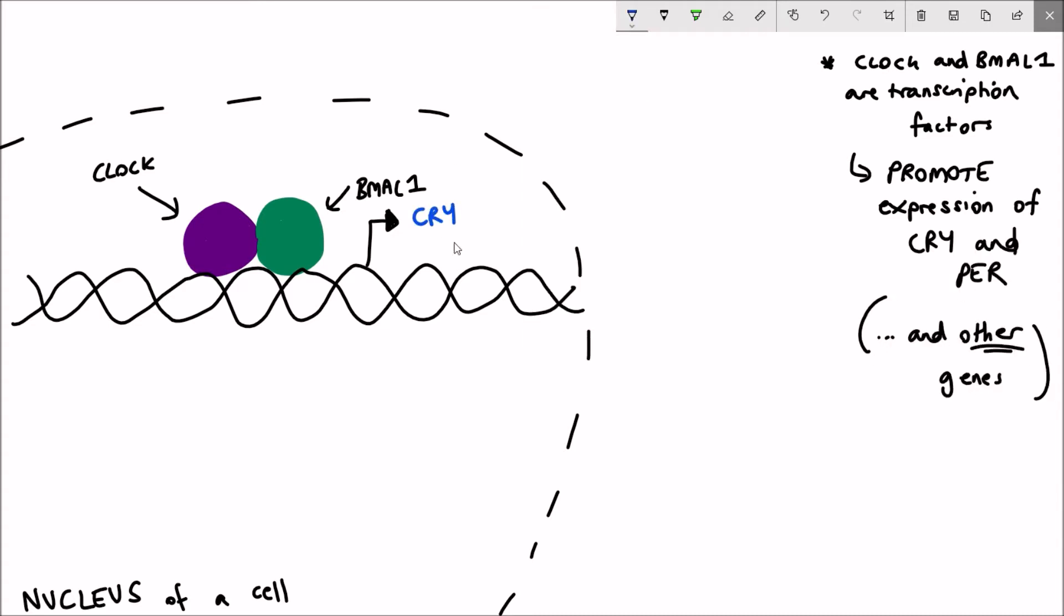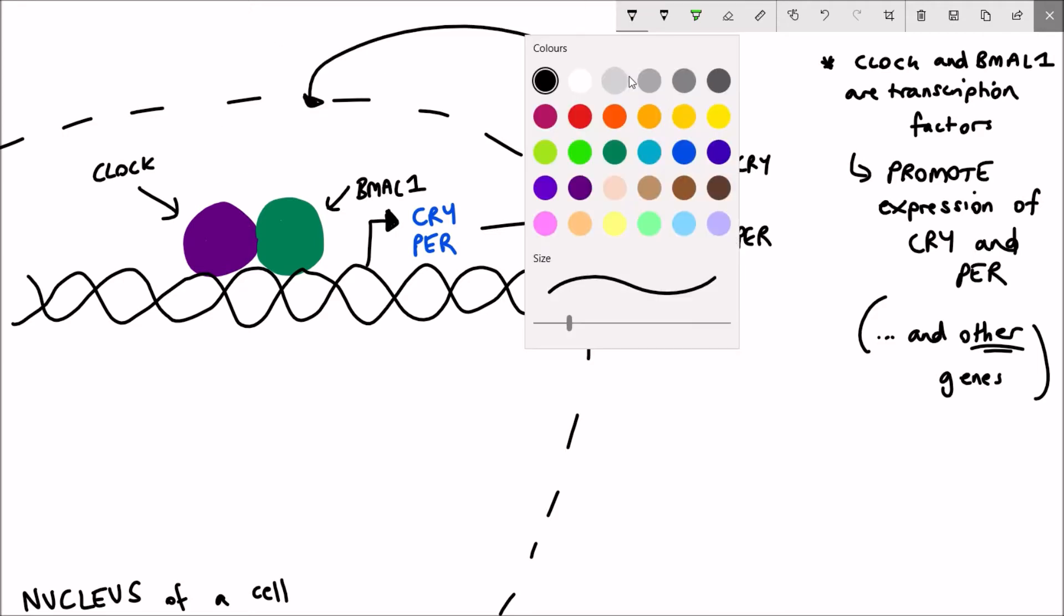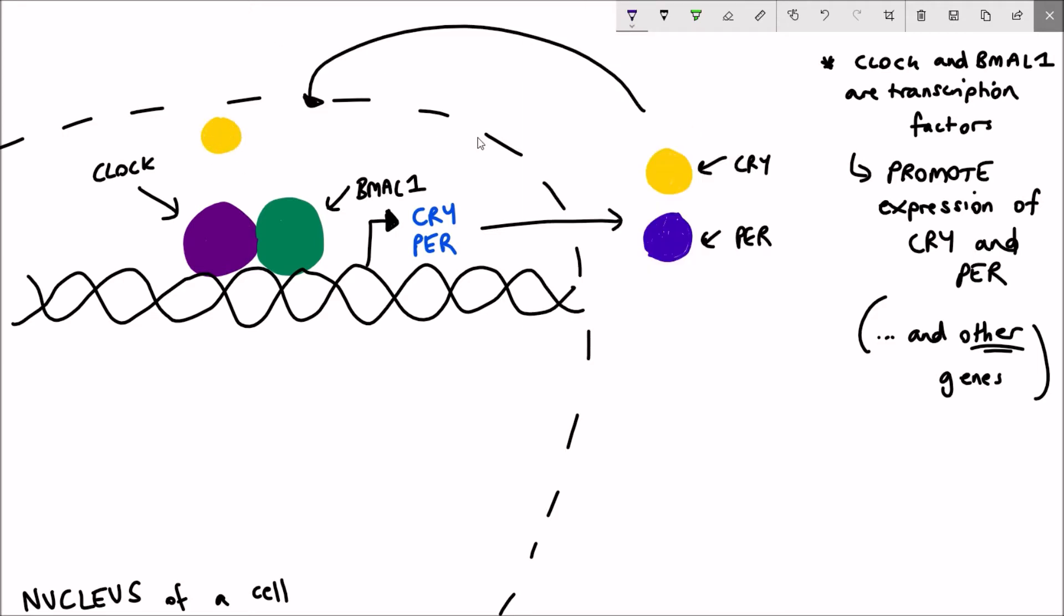But two really important genes that they upregulate is cryptochrome and period. And cryptochrome and period, as I said, they pair together. And what they do is they form a complex with CLOCK and BMAL1 and actually repress the activity of CLOCK and BMAL1. So by repressing CLOCK and BMAL1, they then prevent their own expression.